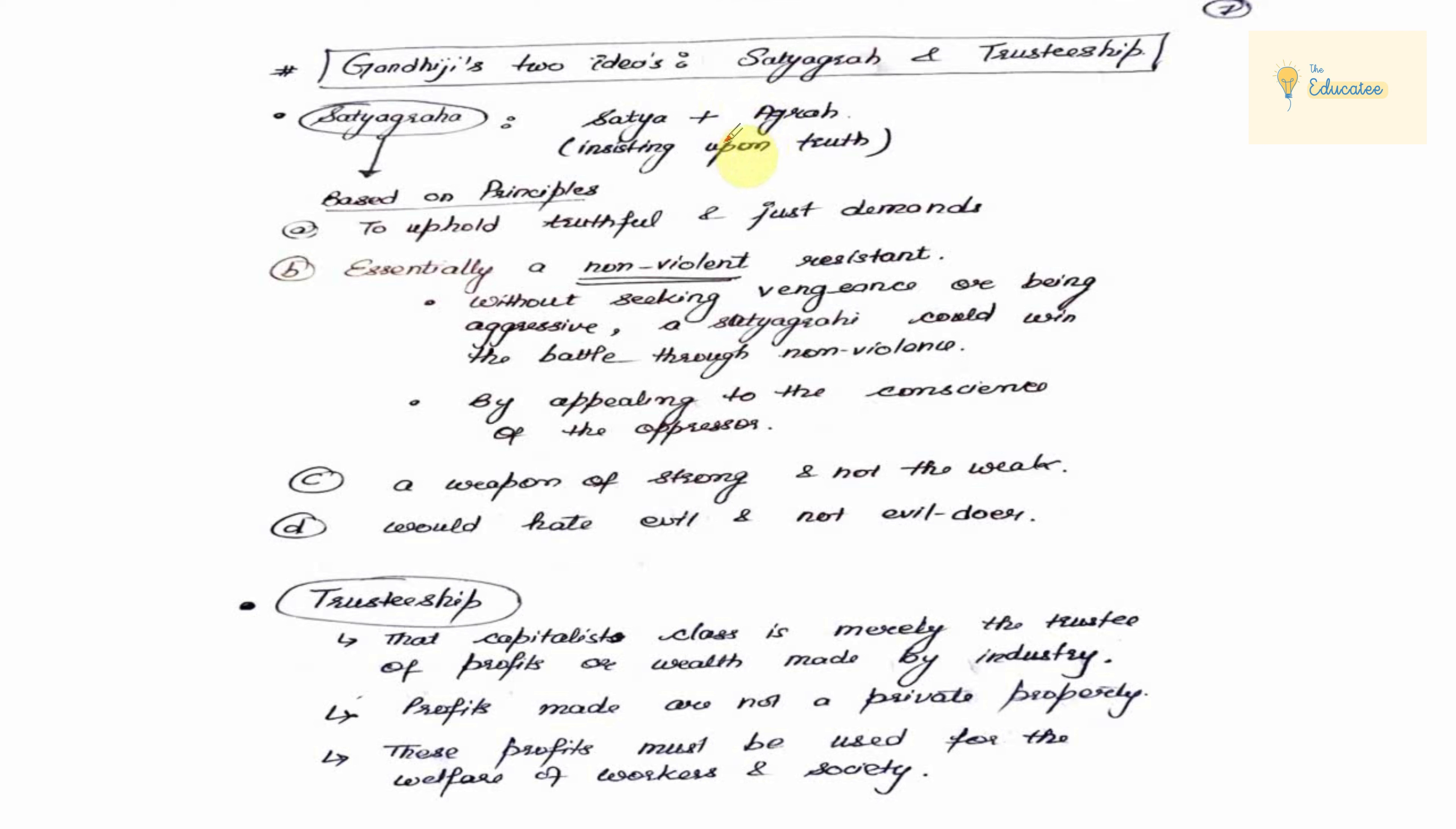Satyagraha means if we break it, then Satya plus Agraha is called insisting upon Truth. We have Agraha and Satyagraha is based on which principles.